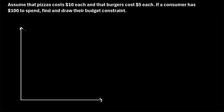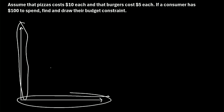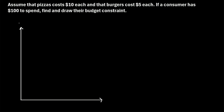On a graph, we have our y-axis and our x-axis. We're going to place one of the goods on the y-axis — let's put burgers on the y-axis. And then on the x-axis, we'll put our other good, which in this case would be pizzas.